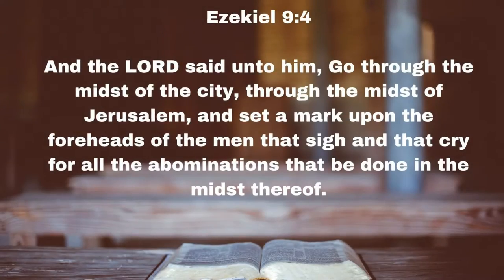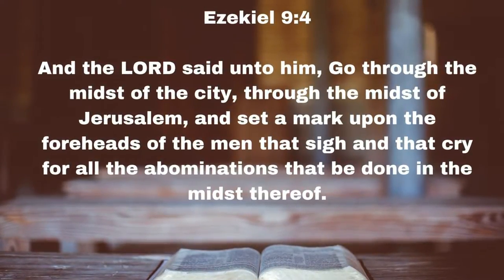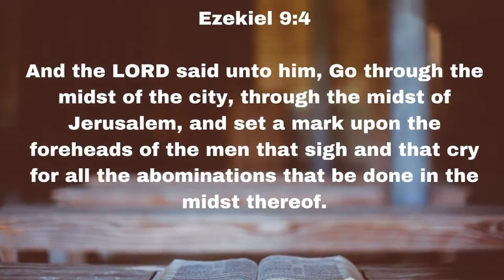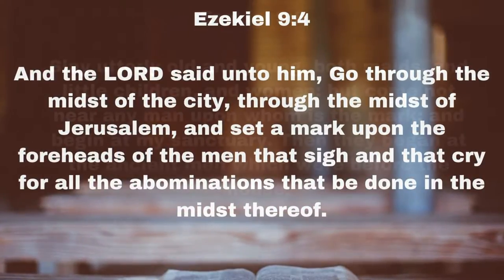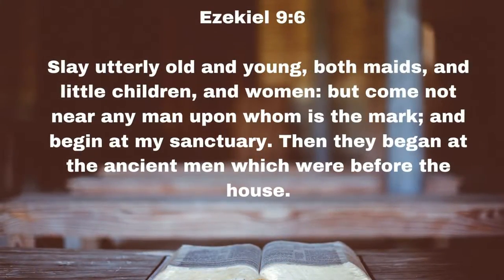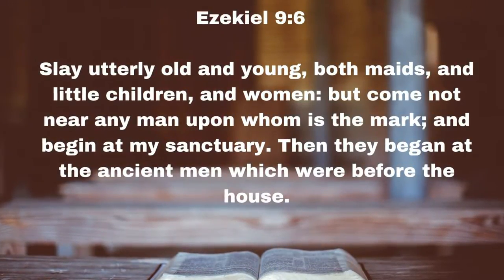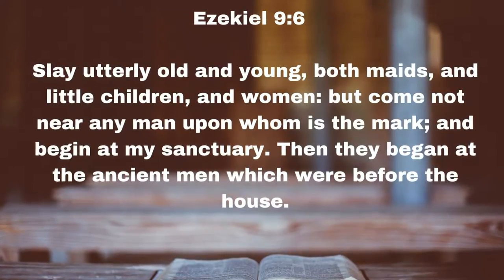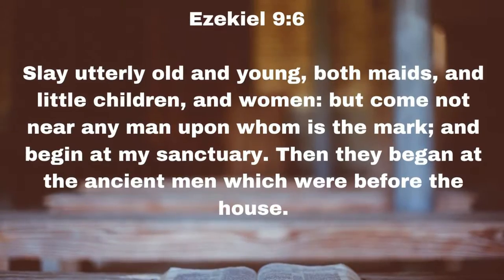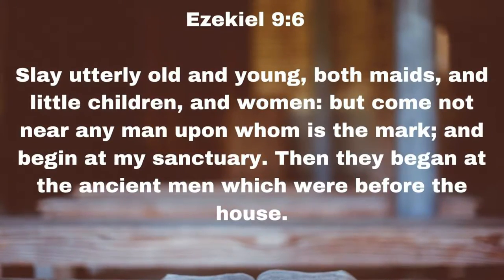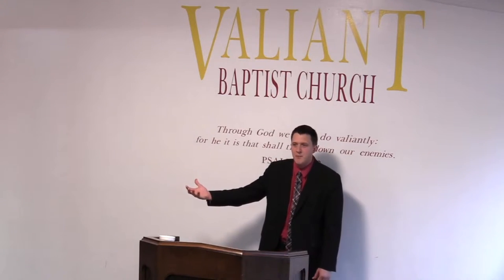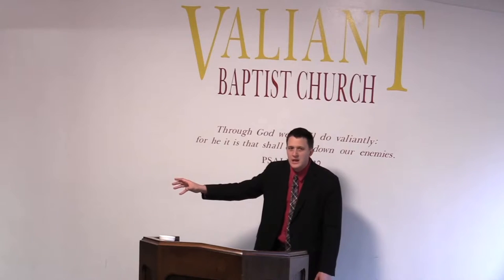Look at Ezekiel chapter 9. The Lord said, 'Go through the midst of the city, through the midst of Jerusalem, and set a mark upon the foreheads of the men that sigh and cry for all the abominations done in the midst thereof. Slay utterly old and young, both maids and little children and women, but come not near any man upon whom is the mark.' We have the exact same statement here showing consistency. And notice it says it's on the foreheads — where is it going to take place in Revelation 13? Either on the right hand or on the foreheads.